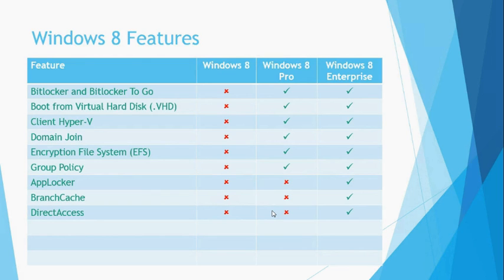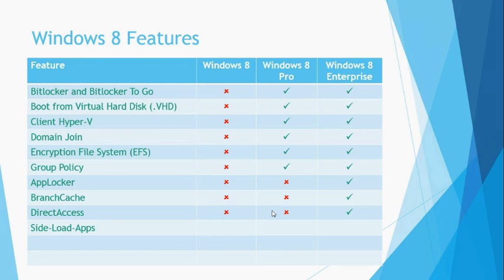The next feature is Side Load Apps. Windows 8 introduces the brand new Windows Store, from which you can download apps onto your Windows 8 computer. Some businesses may want to use their own line-of-business apps which they do not want to publish publicly in the Windows Store. This is where Side Loading comes in — it simply means installing a Windows Store app without publishing it through the Store, installing it directly instead. Side Loading Apps is only available in the Windows 8 Enterprise Edition.